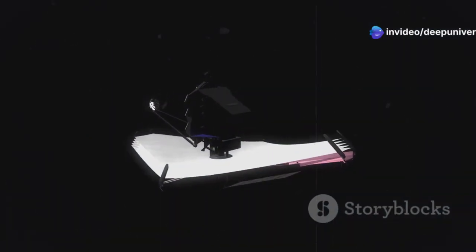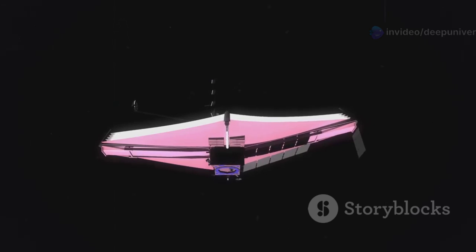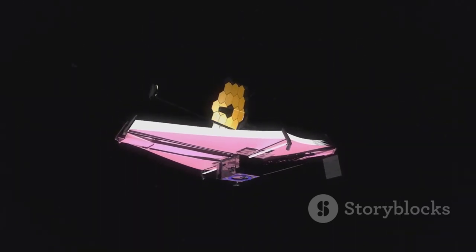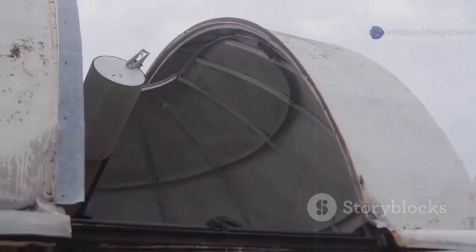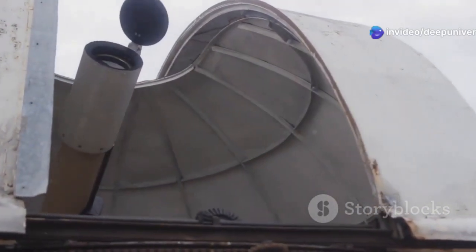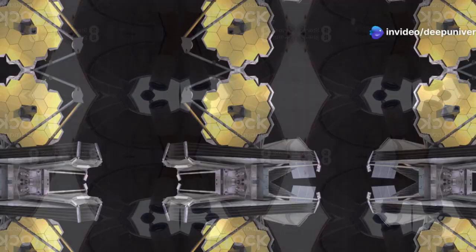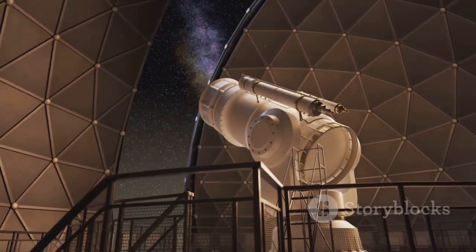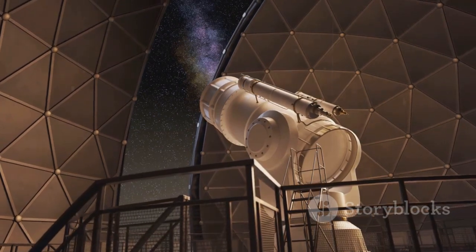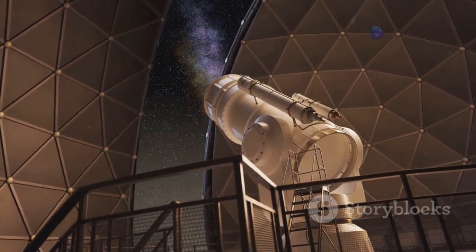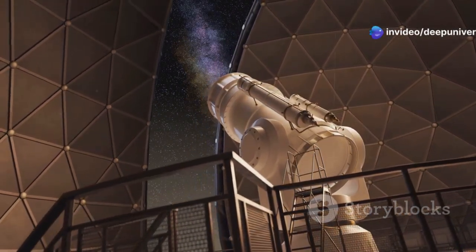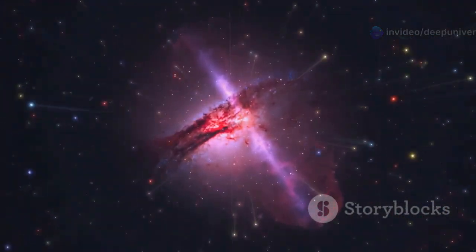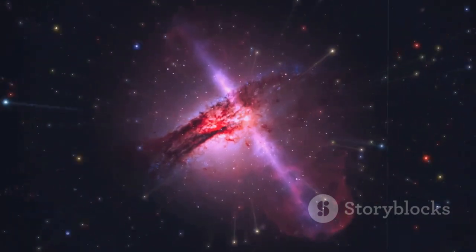Another crucial factor in JWST's remarkable observing power is its large mirror. With a diameter of 6.5 meters, JWST's mirror is the largest ever launched into space. This large mirror allows JWST to collect more light than any previous telescope, significantly enhancing its ability to observe faint objects. The increased light-gathering ability of JWST enables it to see fainter objects and to study them in greater detail, providing astronomers with a wealth of new data. This capability is revolutionizing our understanding of the universe, allowing us to explore its mysteries like never before.